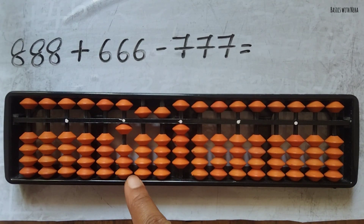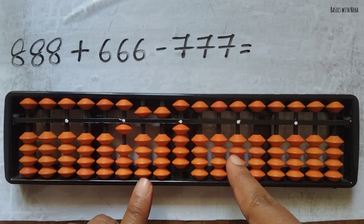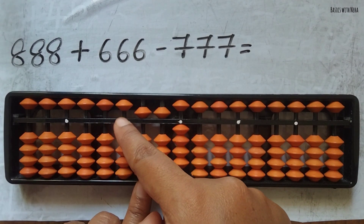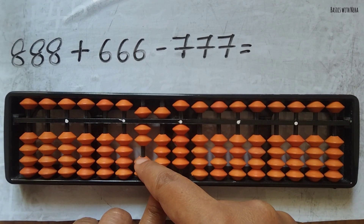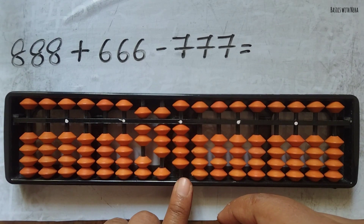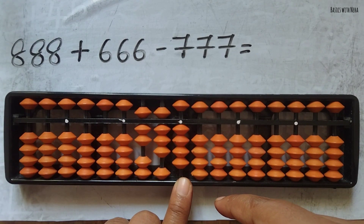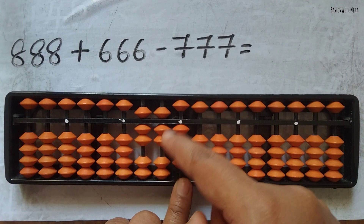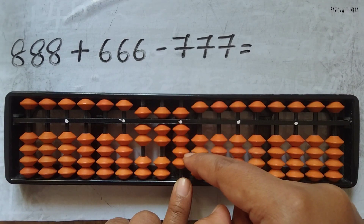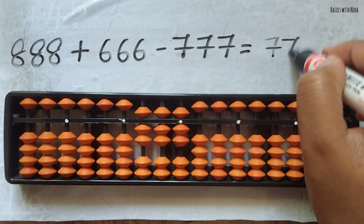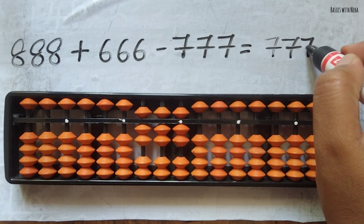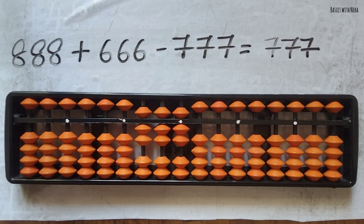Now I need to minus 777. To minus 7, it is minus 10 plus 3. Again minus 7 is minus 10 plus 3. Again minus 7, you have to use the combination formula which is minus 10 plus 5 minus 2. So the answer to this question is 777.